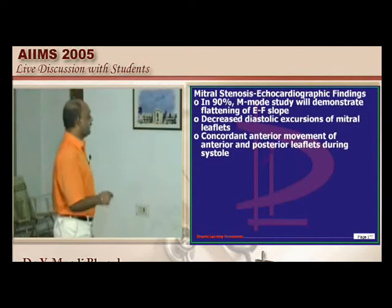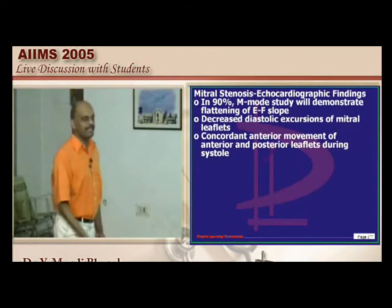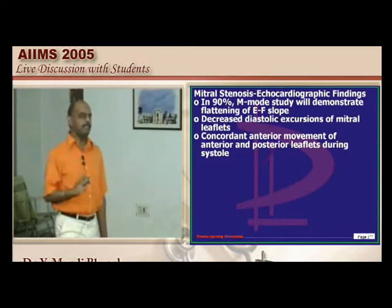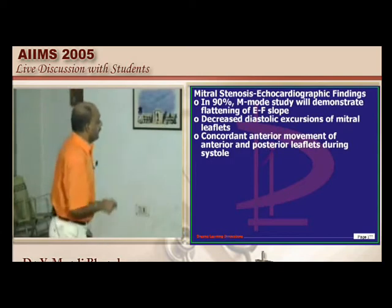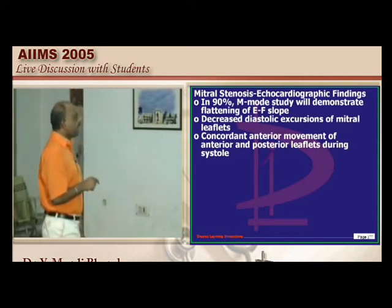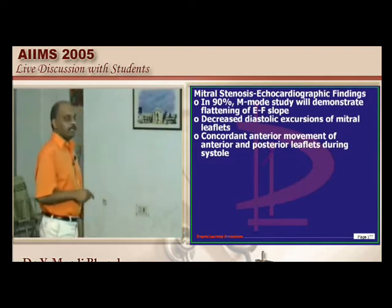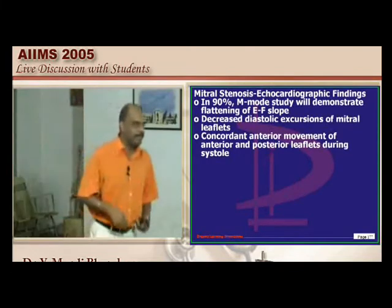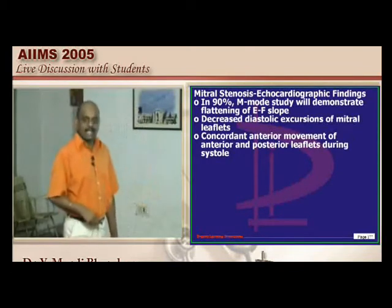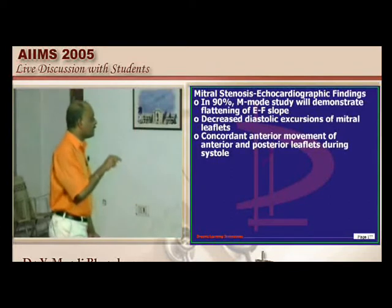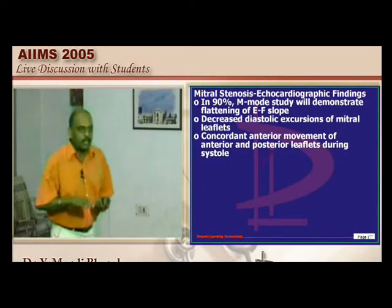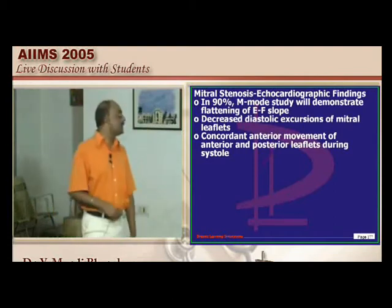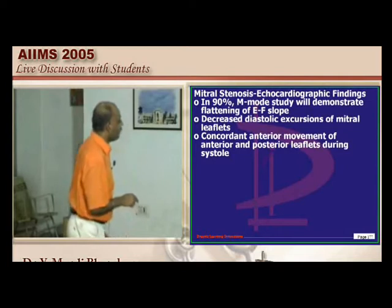In mitral stenosis, there is decreased diastolic excursion of the mitral leaflets. Normally the anterior and posterior leaflets don't move passively. But if there is calcification of the mitral valve, both anterior and posterior leaflets move concordantly and anteriorly — a side-by-side movement occurs. This is illustrated by a severely dilated left atrium and a thickened mitral valve.